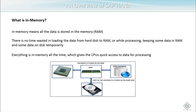In-memory means that the whole data is stored in memory itself, so there is no time wasted loading data from the hard disk to RAM. In traditional databases, some data is kept in RAM and most data remains on disk, brought into RAM only when required. But in SAP HANA, all data is stored in memory itself, saving the time wasted reading from disk. Everything is in memory all the time, giving the CPU quick access to the data for processing.